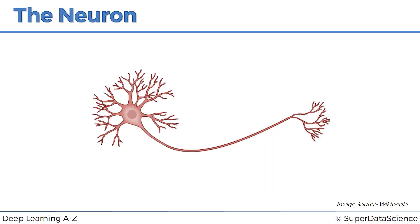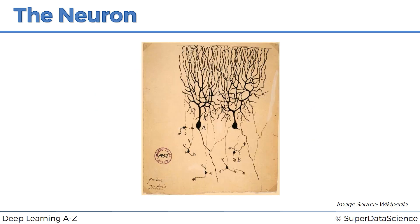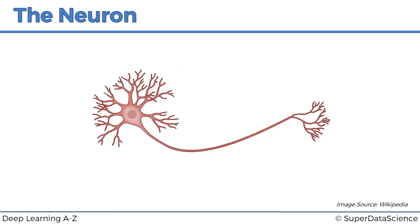Here's a neuron. This is what it looks like, very similar to what Santiago Ramón drew. And here in this neuron, what we can see is that it's got a body. That's the main part of the neuron. And then it's got some branches at the top, which are called dendrites. And it's also got an axon, which is that long tail of the neuron.